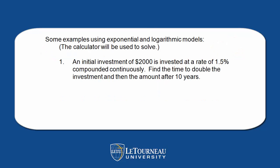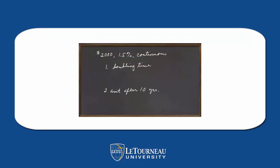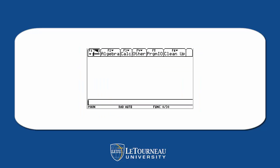Let's suppose we have an initial investment of $2,000 at a rate of 1.5%, compounded continuously. We want to do two things: find the time to double, and then how much do we have after 10 years? We're going to set it up using the blackboard, but then we'll use the calculator to compute. Remember the quick way of doing doubling.